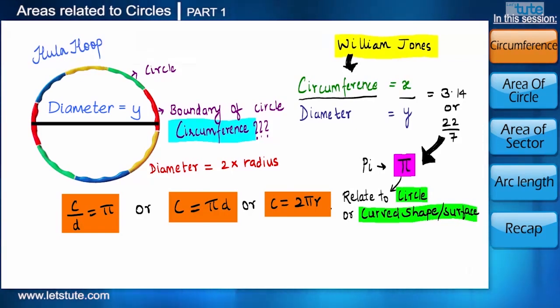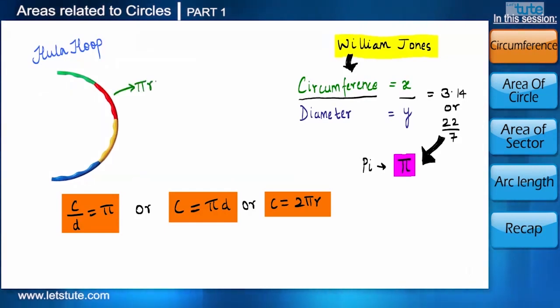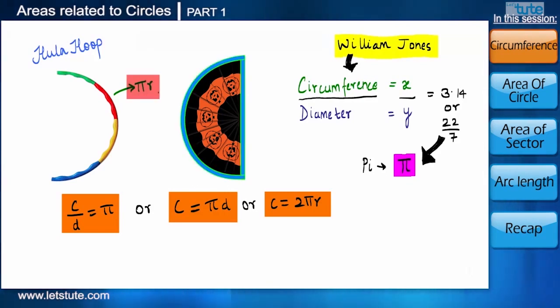Now suppose if we join only half of the hula hoop, then its circumference will be πr, correct? But if we have a look at the huge flag in the circles, which is a semicircle, well then can we use πr to calculate its boundary? No, we cannot because there is a diameter which is also a part of the boundary now. So to find the complete boundary of the semicircle, we will have to add diameter to πr.